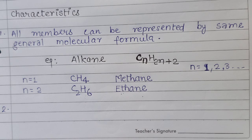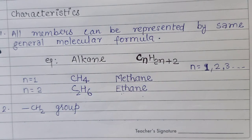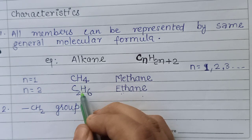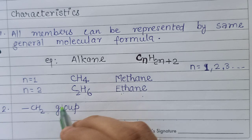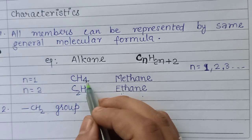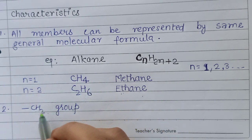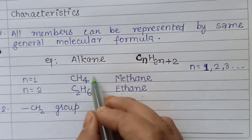The second characteristic: two successive members differ by a CH₂ group in their molecular formula. For example, CH₄ has four hydrogens and C₂H₆ has six — six minus four equals two hydrogens, and the carbon count increases by one. So the difference between two successive members is one CH₂ group.